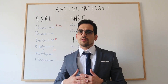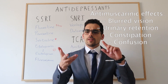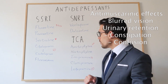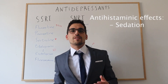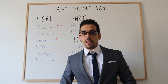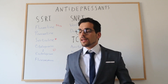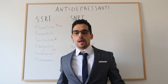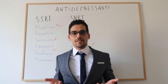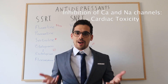When TCAs antagonize the acetylcholine receptors, patients may present anti-muscarinic effects: blurred vision, urinary retention, constipation, and confusion. By blocking the histamine receptors, people may feel more sedation. They also act on ion channels — inhibiting sodium and calcium channels can help with mood stabilization, but high TCA levels carry a risk of cardiac toxicity.